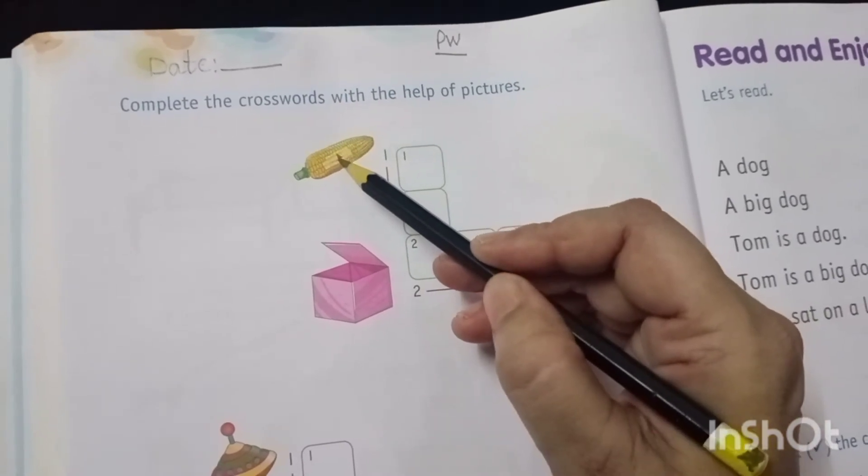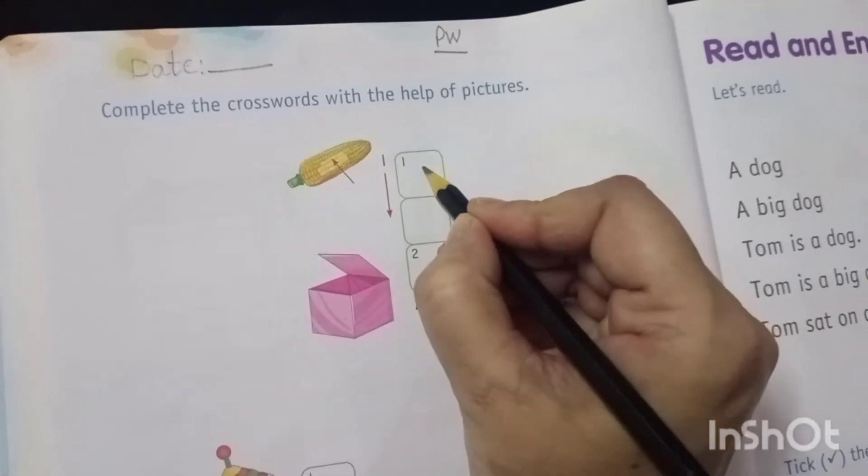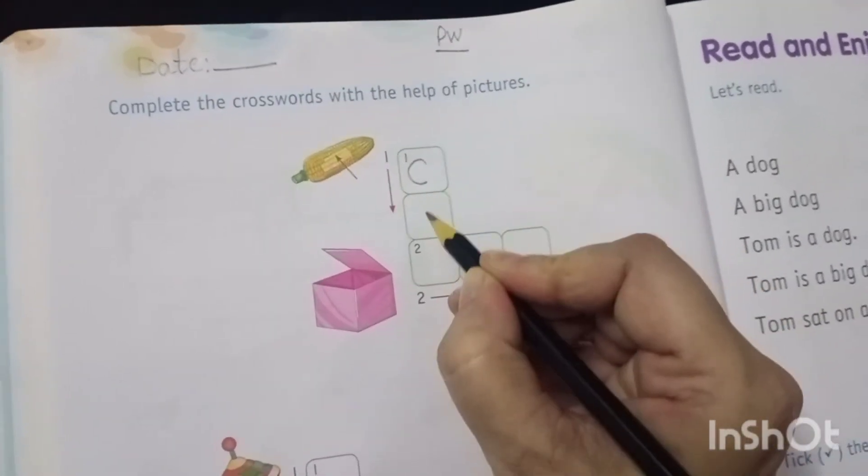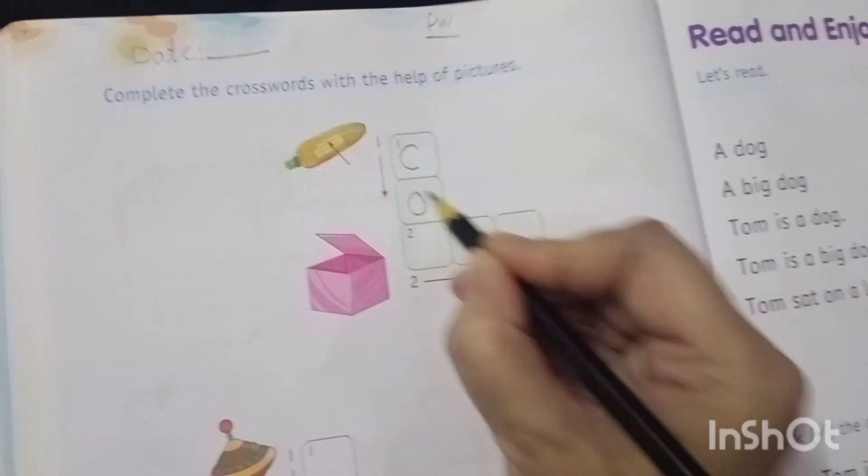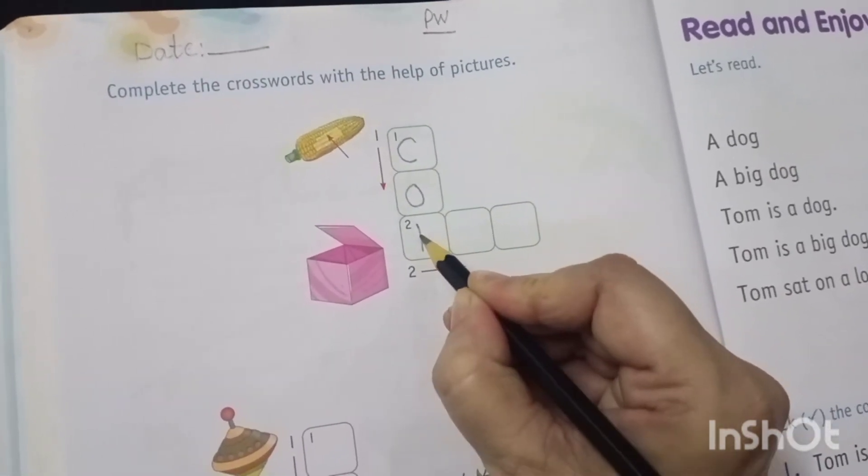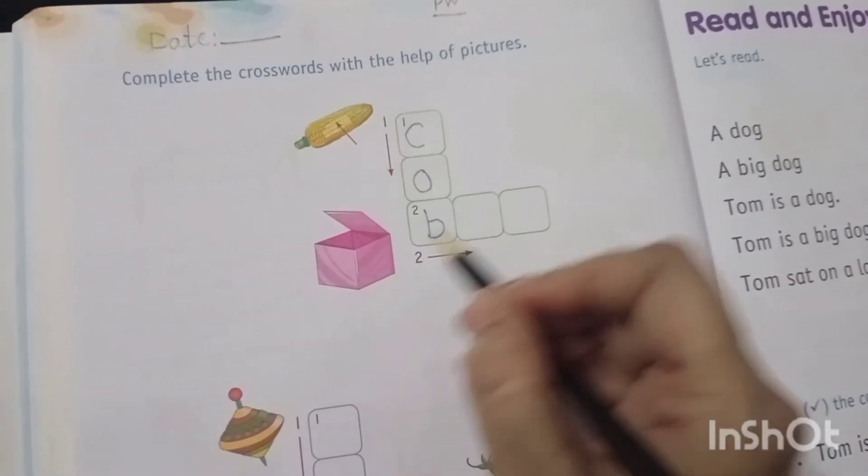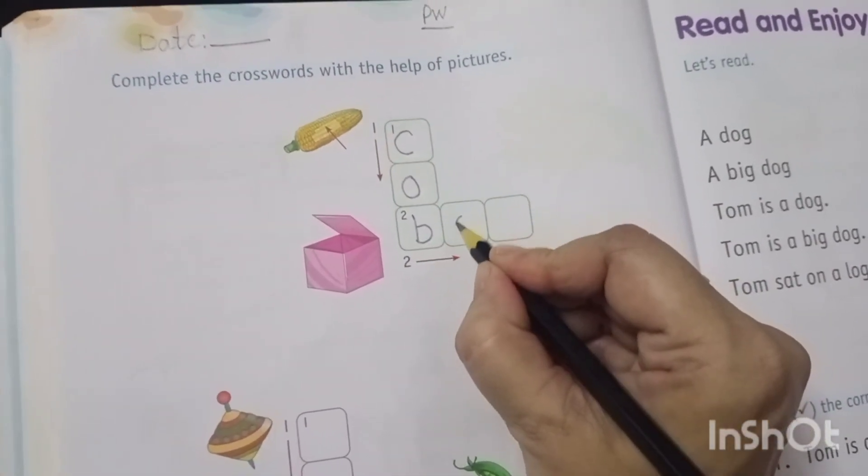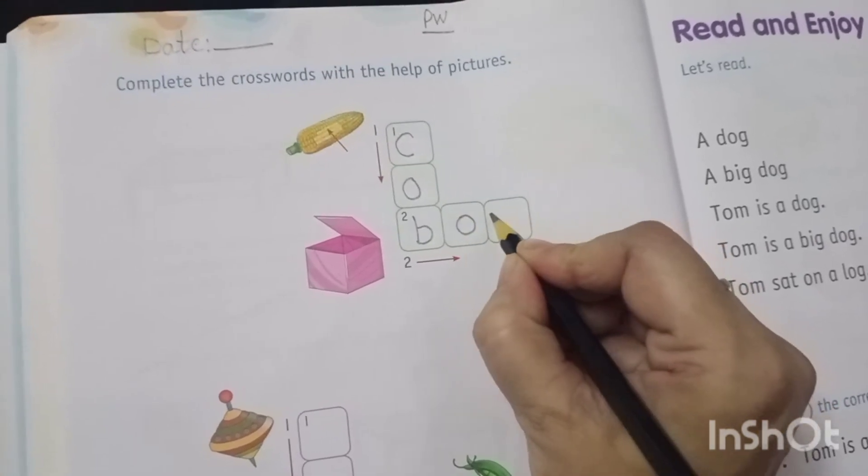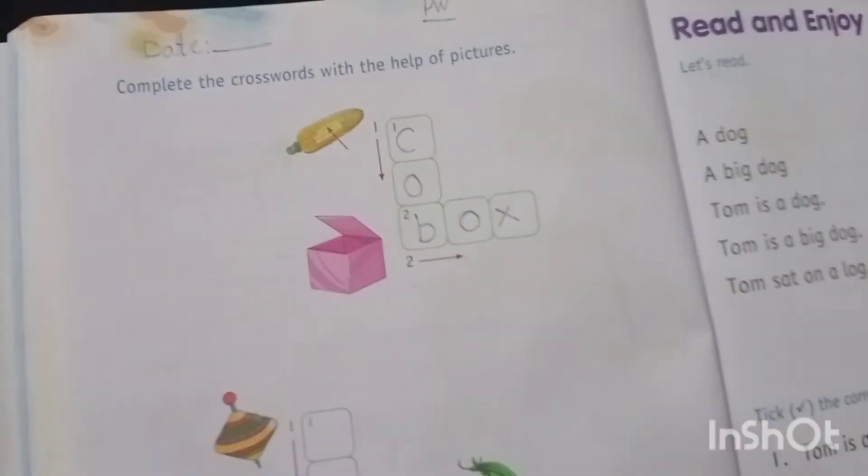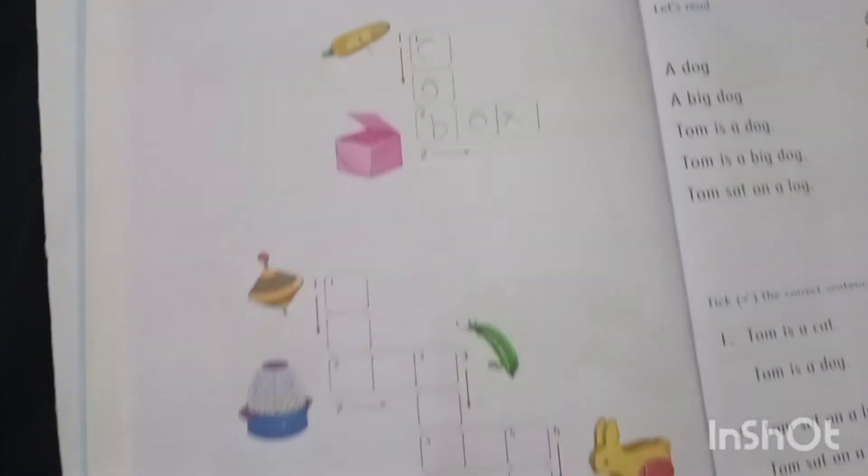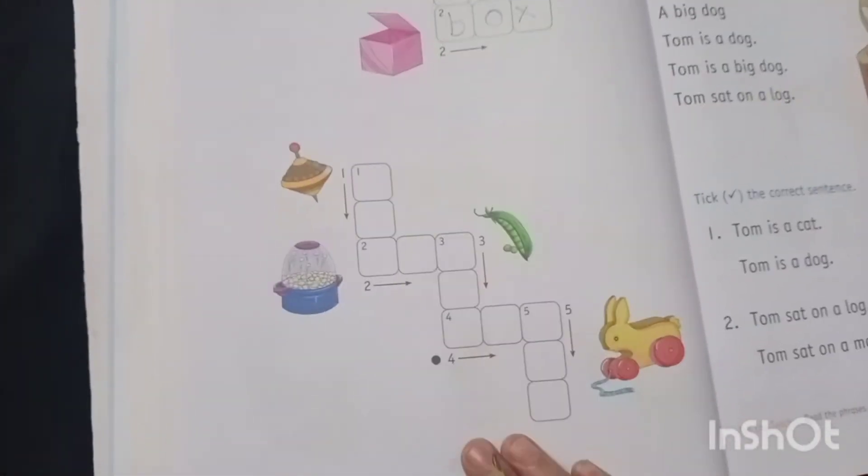Like this, this is the picture of a cob. C O B Cob. And what is this? Yes, Box. B O X Box. Okay students, now you have to complete this also.